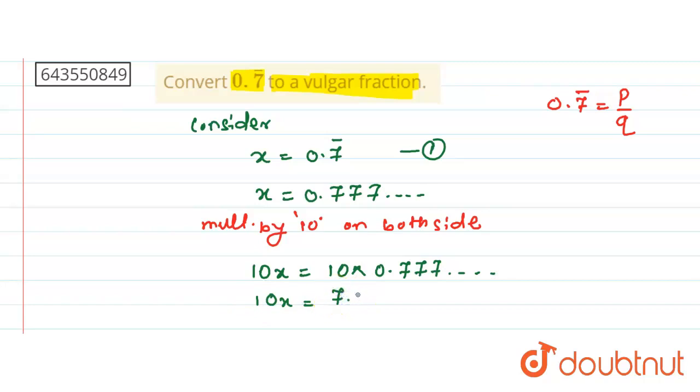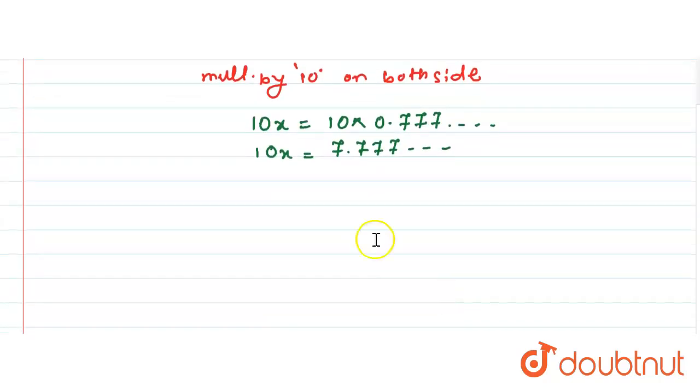So see, this can be written as 10x is equal to 7 plus 0.777 and so on. So this is nothing but what it is, 7 plus 0.7 bar.